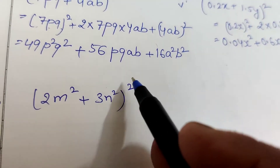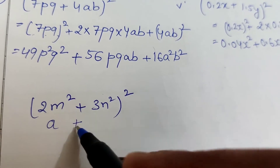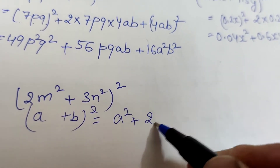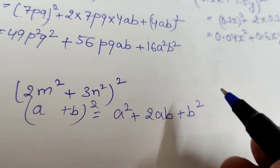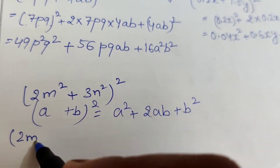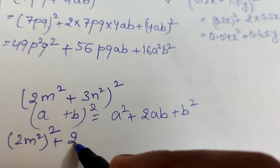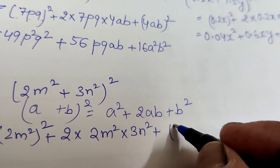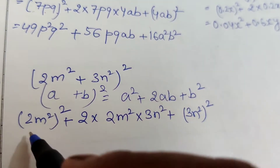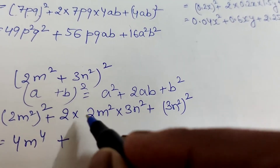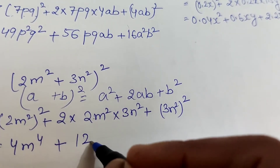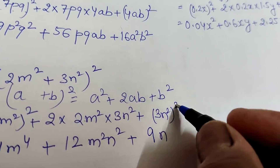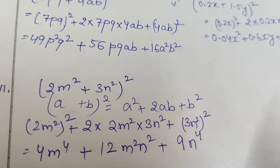The sixth question is (2m² + 3n²)². Compare: a = 2m², b = 3n². The answer is: square of the first number, plus twice the product, plus square of the second number. (2m²)² = 4m⁴. Then 2 × 2 × 3 = 12, so 12m²n². And (3n²)² = 9n⁴. So the answer is 4m⁴ + 12m²n² + 9n⁴.